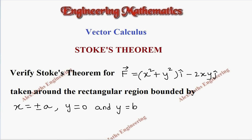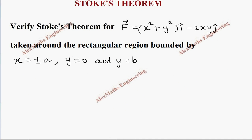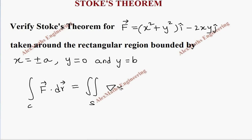Hi students, this is Alex. In this video we are going to verify Stokes' theorem for the given F vector, taken around the rectangular region bounded by x = ±a, y = 0, and y = b. Stokes' theorem states: the integral over C of F·dr equals the double integral over the surface of (del × F)·n̂ ds.